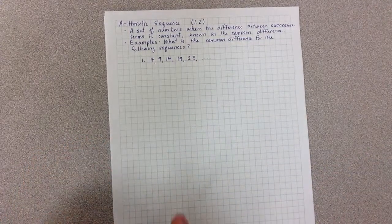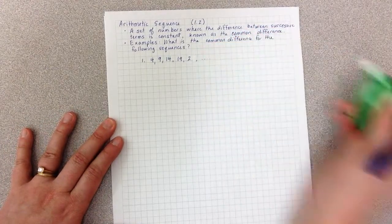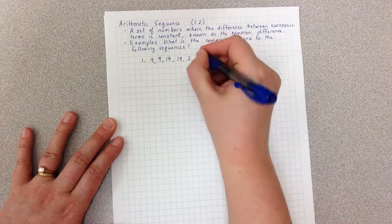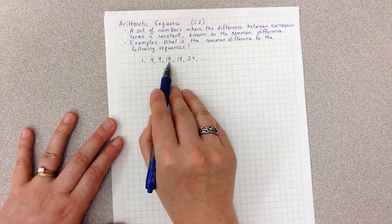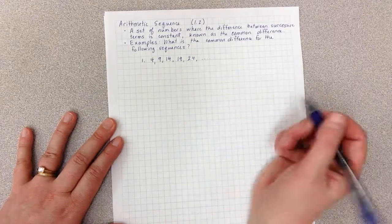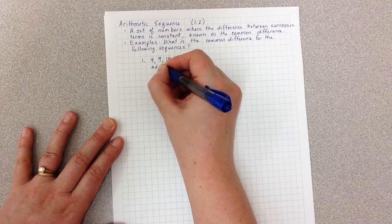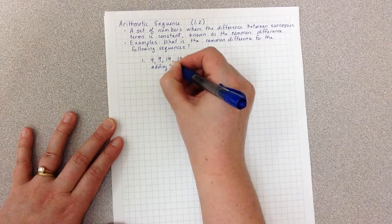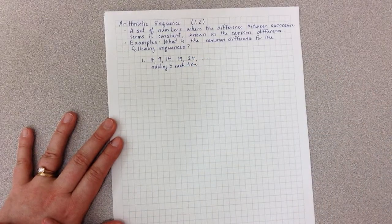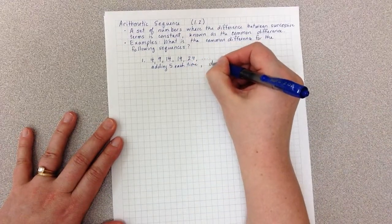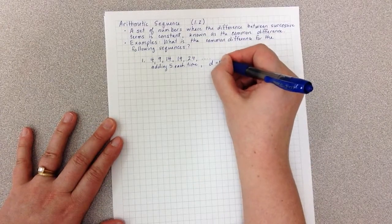The sequence is 4, 9, 14, 19, 24, and so on. We want to know: the common difference is what am I adding each time to get to the next term? So what did I have to add from 4 to get to 9, from 9 to get to 14, and 14 to get to 19, etc.? We look at this and we say, well, actually I am adding 5 each time. The notation we use — we often use the letter D to represent common difference — so we would say that D equals 5.